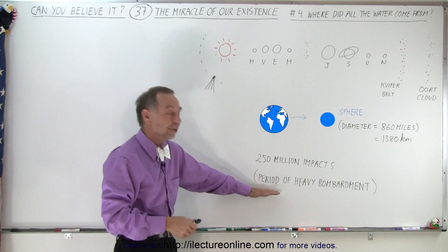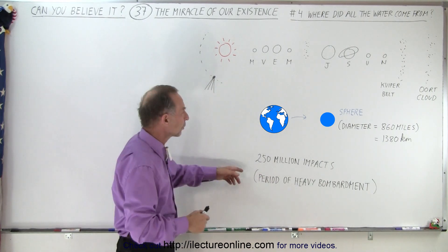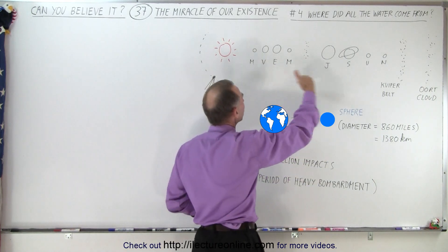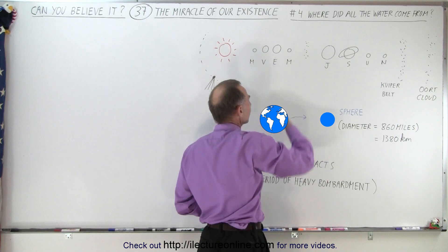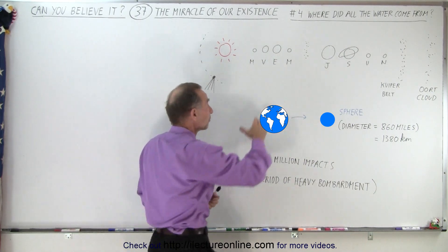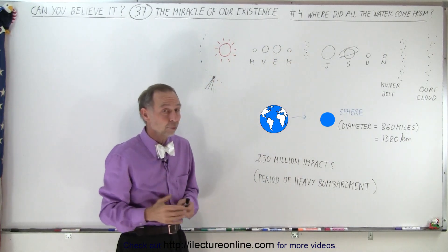But in the early period, as we call it, the heavy bombardment, the first 100 to 200 million years of the existence of the Earth, hundreds of millions of comets came streaming in, and many of those impacted the Earth, slowly building up the water supply. Not only of the Earth, but of Mars, because we know Mars had oceans, and presumably Venus probably had oceans as well.